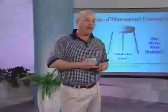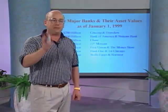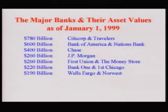Patterson, Schein, and Dentsply — what I want you to do is go back and put pressure on these companies. You've got these big banks: Citicorp Travelers got $780 billion, Bank of America and Nations Bank got $600 billion, Chase has got $400 billion, JP Morgan $260 billion, First Union Money Store $260 billion, Bank One and First Chicago $220 billion, Wells Fargo Northwest combined at $190 billion. These people have customers in all 50 states. We are approaching the point where by year 2002, one of these big boys is going to have a trillion dollars in assets.